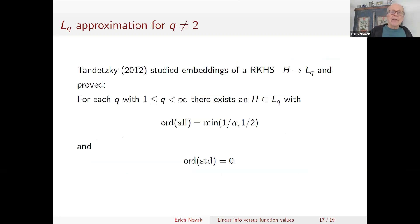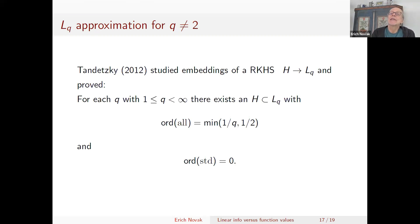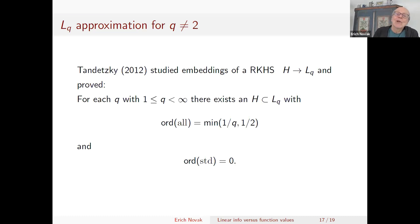As a remark, one can also study L_q approximation, not only L2 approximation. There is a similar result for the order of convergence due to Ralph Tandetzky. On the left side you still have a Hilbert space but you consider the error in L_q, and there are again cases where you do not get any order of convergence if you consider only function values, but you do get some order of convergence if you consider lambda_all.